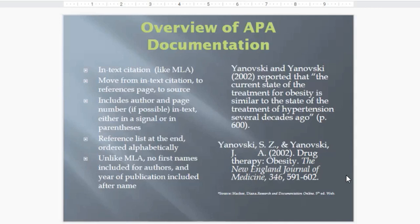You might notice that as a difference. Rather than saying according to Steven Pinker, in APA you'd just say according to Pinker. Then in the references, you include their initials — so Pinker, S. APA doesn't say a lot about this, but it might be a way of limiting the possibility of gender bias, since first names can carry gender identification. Here's an example of a narrative citation: Yanofsky and Yanofsky (2002) reported that quote the current state of treatment of obesity is similar to the state of treatment of hypertension several decades ago, p. 600. We have two authors, so we include both; it's a narrative citation so we use AND.